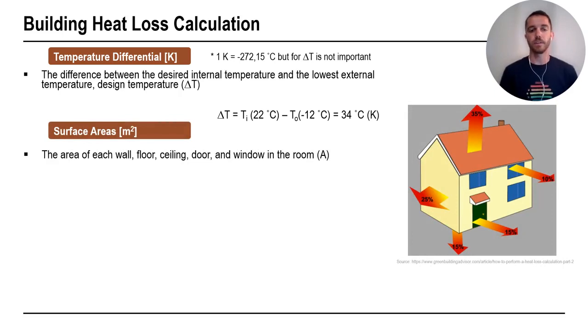Another point is surface areas in square meter. So this is surface area of our wall, floor, ceiling, or windows. In this example, or in this photo, you can see how heat loss is distributed through the building. So 35% is going through the ceiling, or the roof, 25% through the walls, 15% through the ground, 15% through the door, and 10% through the windows.